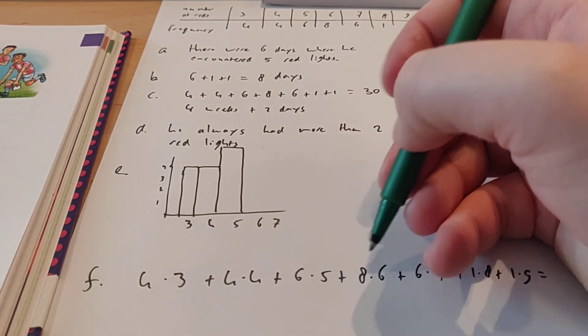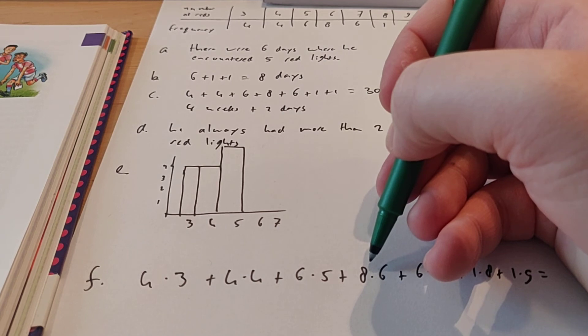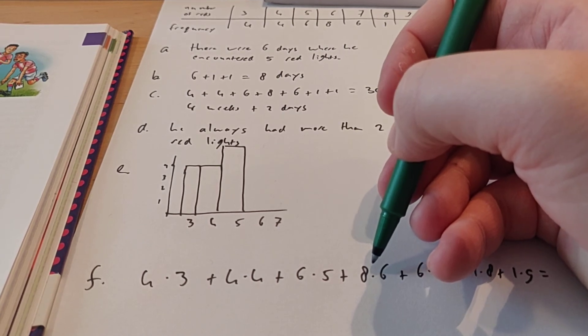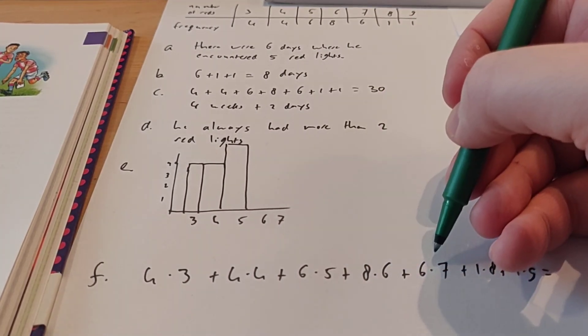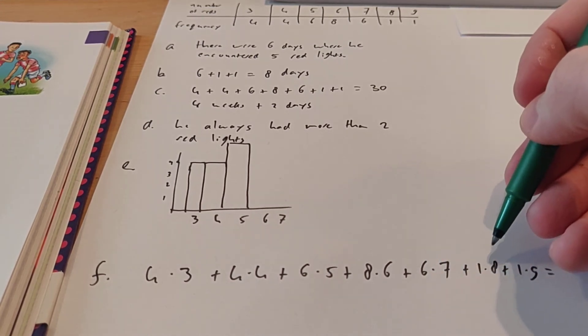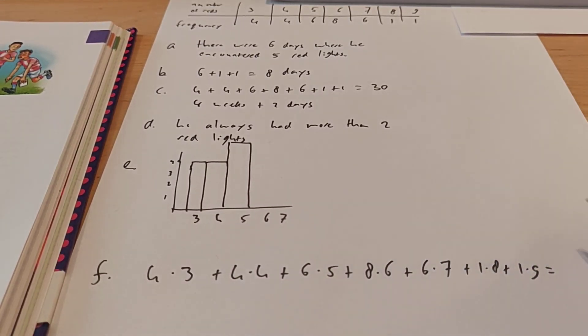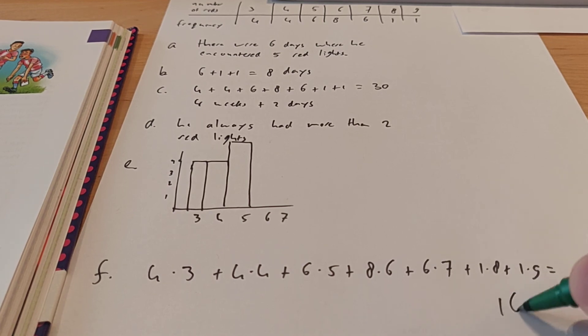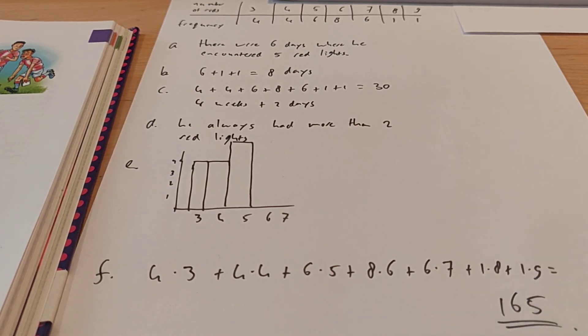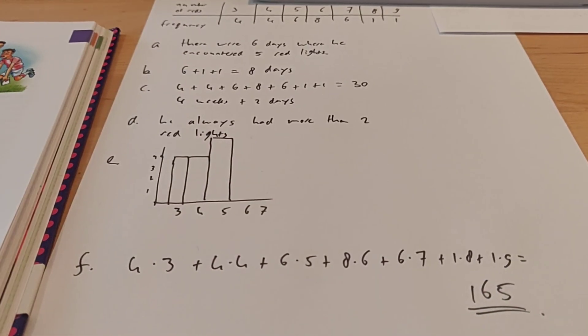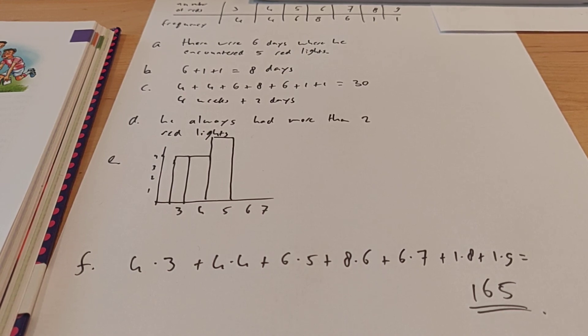Here, I'm now here. This is 30 together. This is 8 times 6, and here we have 6 times 7, and here we have 8, and here we have 9. If I add all of that, I get 165. So that's the number of red lights that he had in total during those 30 days.